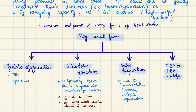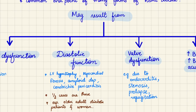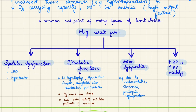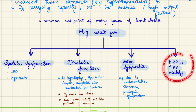Diastolic dysfunction accounts for half of cases of congestive cardiac failure and occurs especially in older adults with diabetes and in women. CHF can also result from valvular dysfunction, chiefly due to endocarditis, which causes the valve to become stenosed, prolapse, or regurgitate the blood being pumped forward.